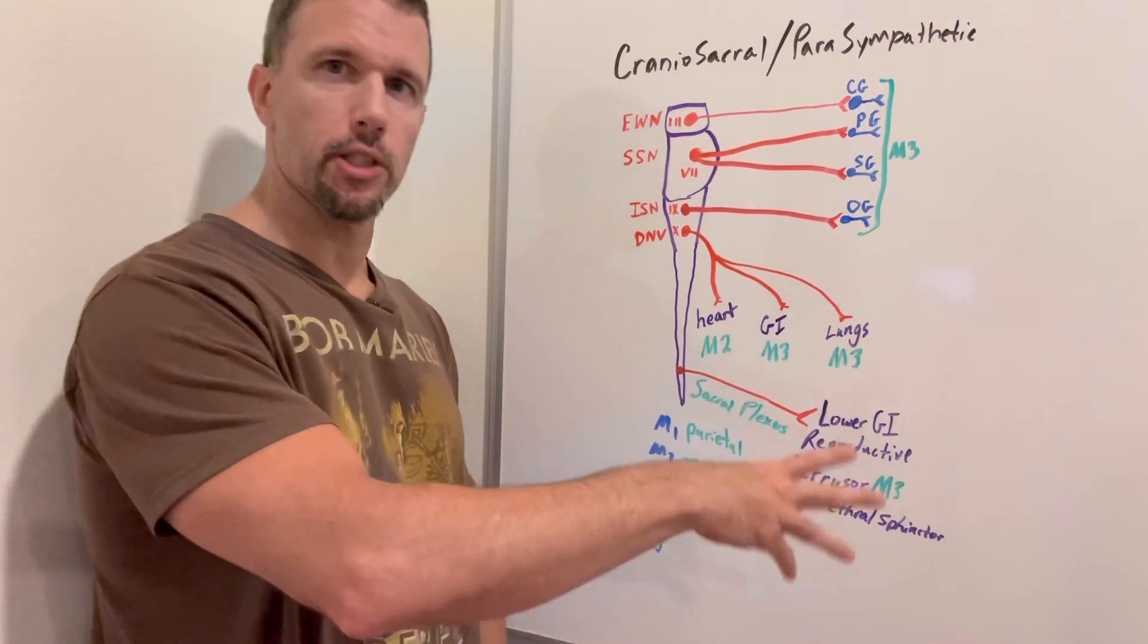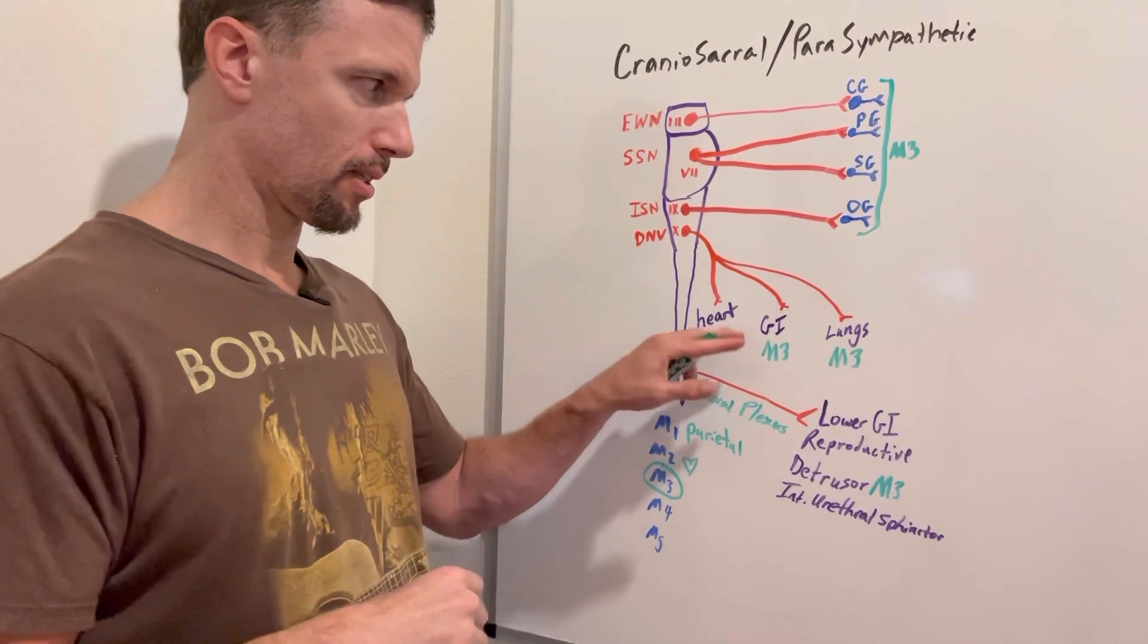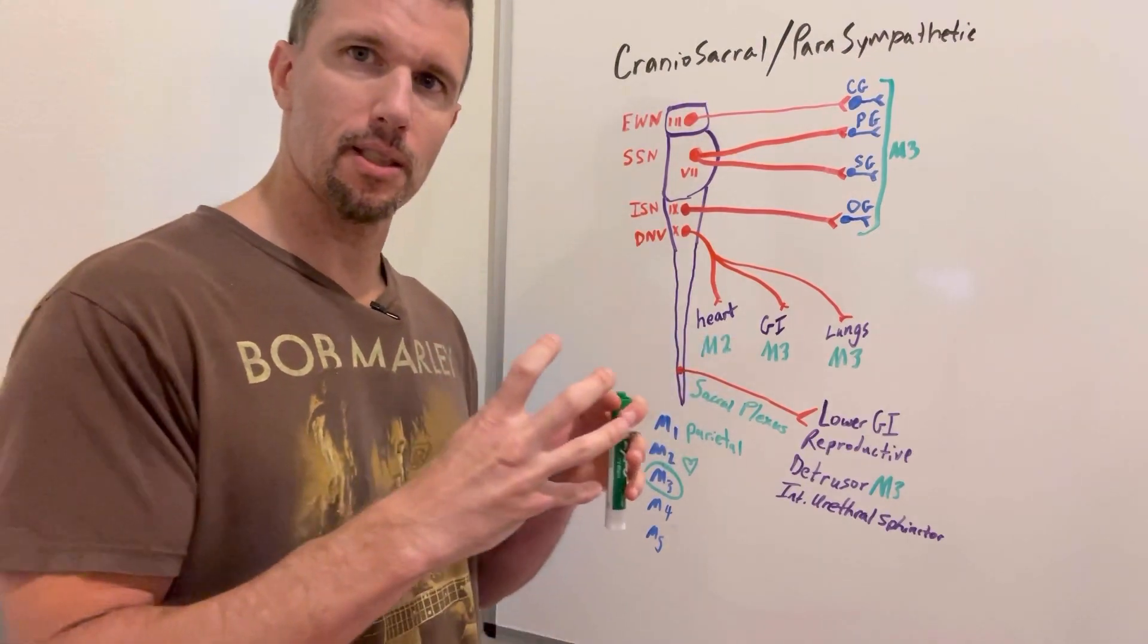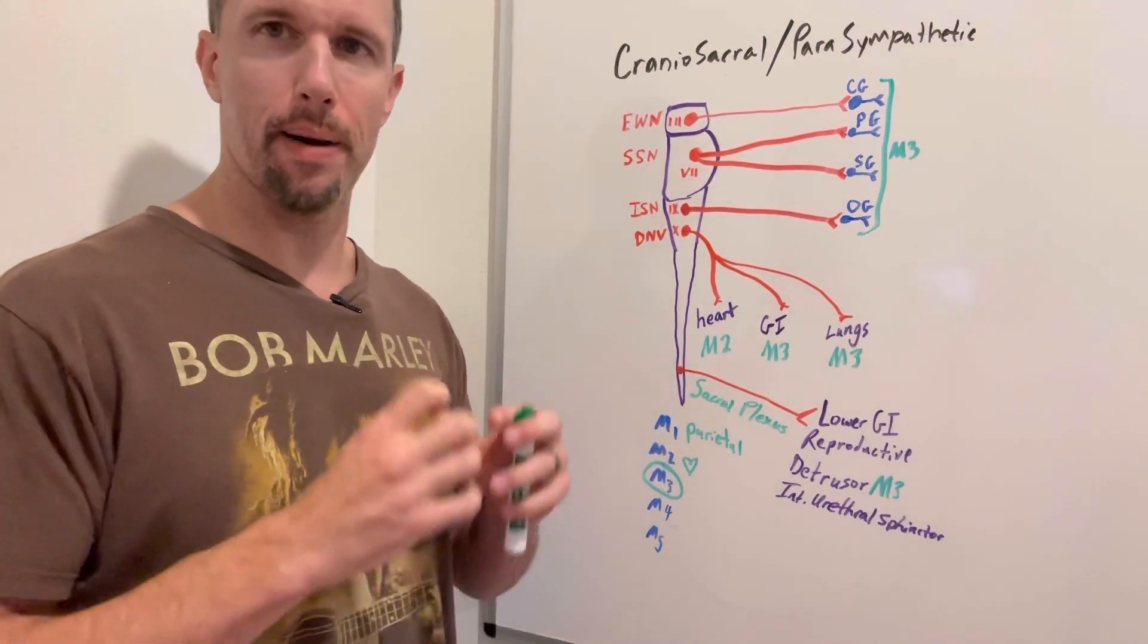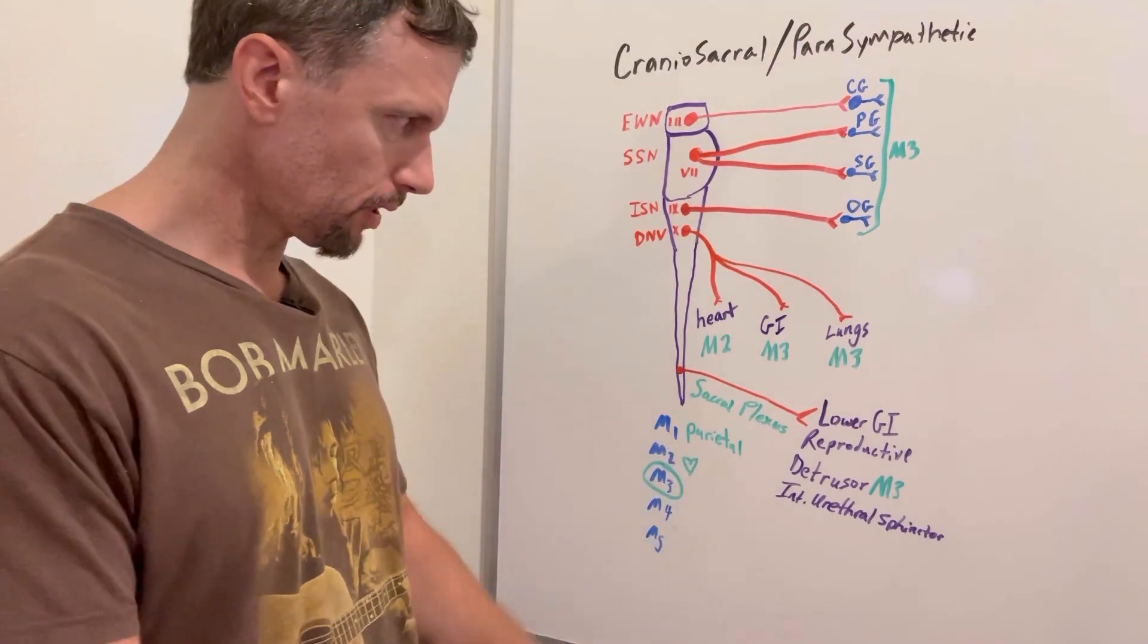For the most part, most of the secretions and most of the motility contraction - this is G-stimulatory, so it's going to stimulate contraction all through that peristalsis to move the contents along the intestines - that's going to be M3.